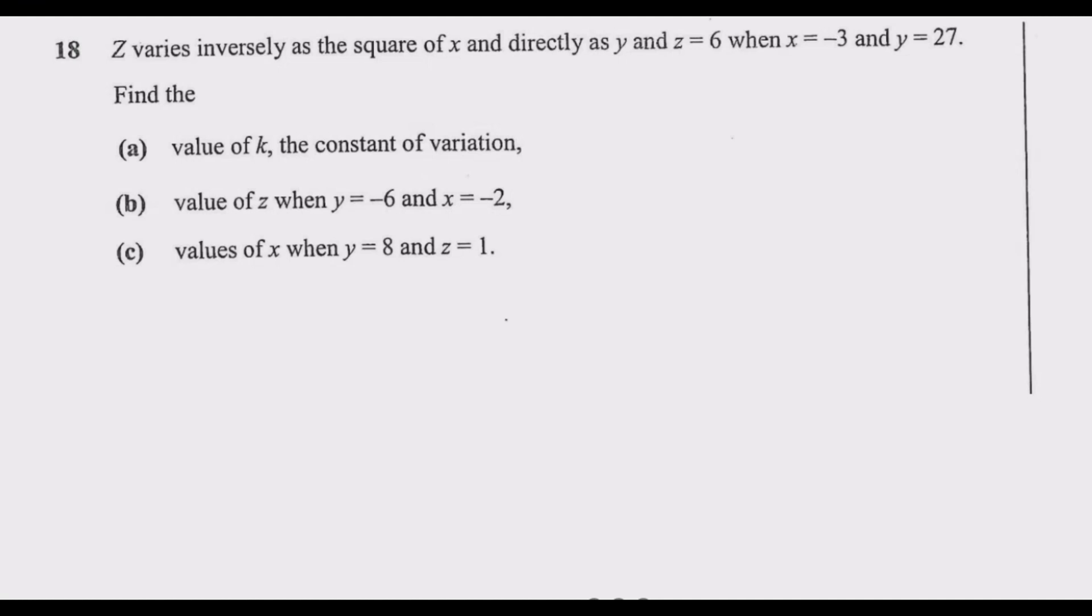Let us look at question 18. Z varies inversely as the square of x and directly as y, and z equals 6 when x equals negative 3 and y equals 27.